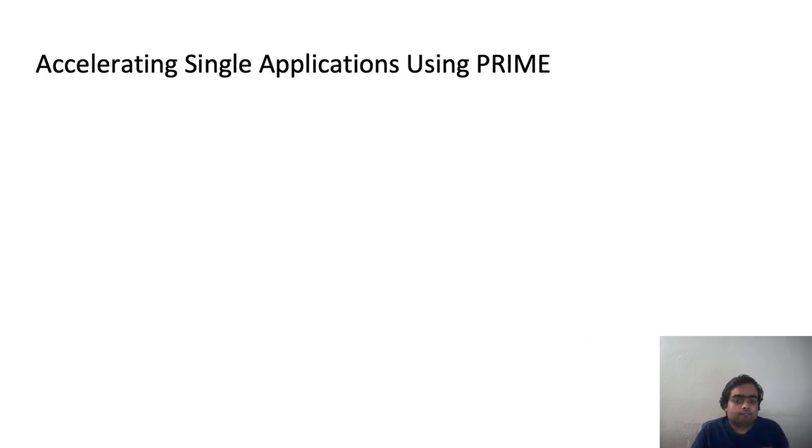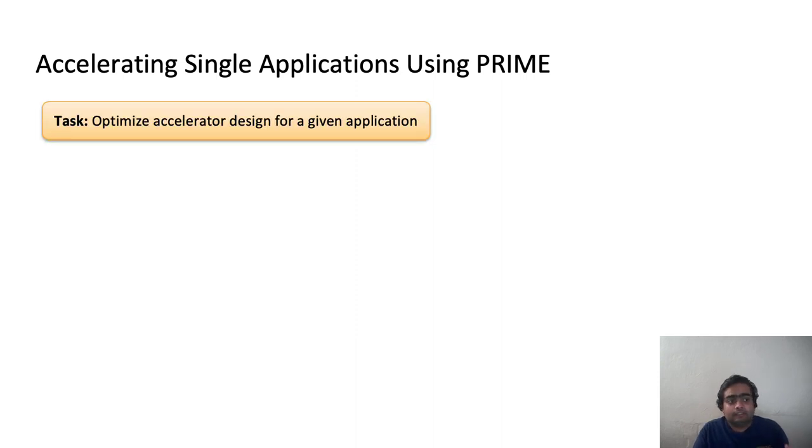Okay, so how does that method perform? First of all, we present some results which show the performance of PRIME in accelerating single applications. So in this case, we are given a particular application and some data which corresponds to certain accelerators and the latency values for this application. We want to figure out if we can design a better accelerator using this dataset for this given application. So we considered nine different applications in our case.